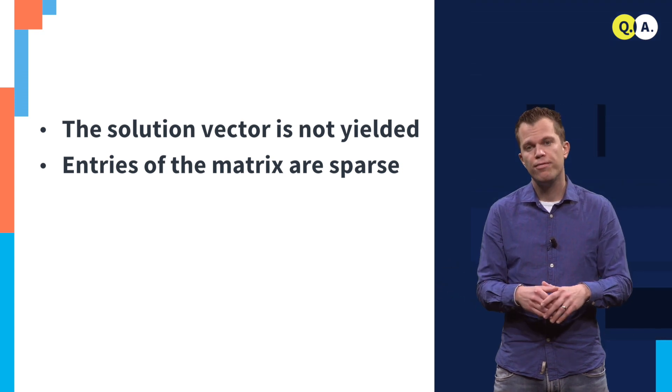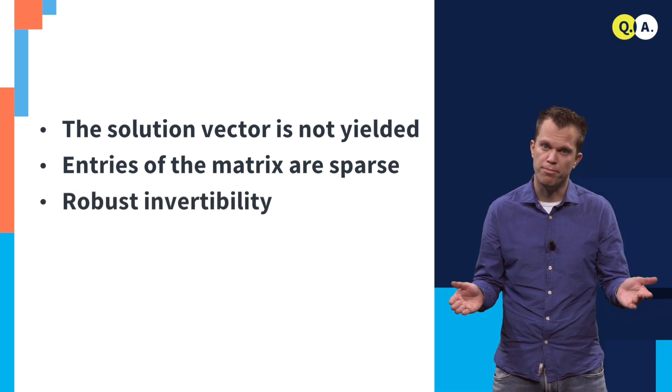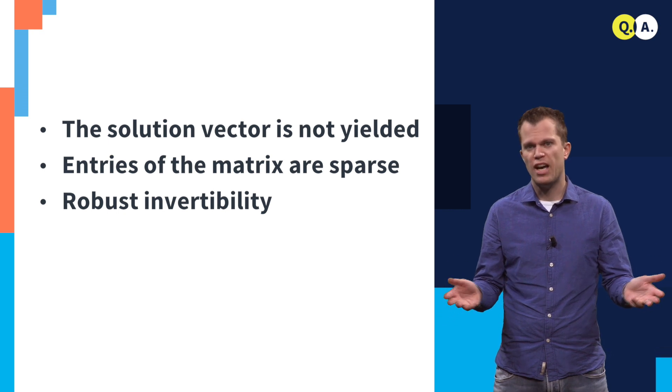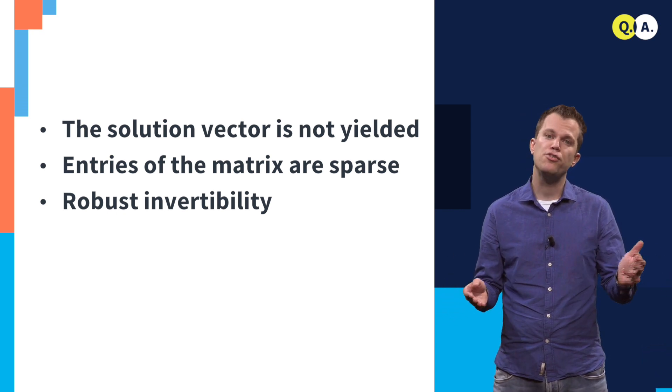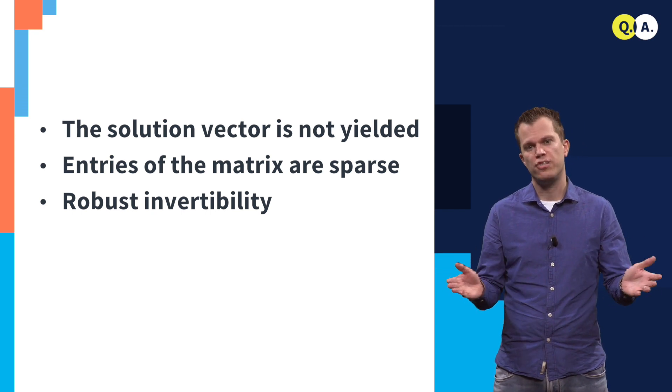Another limitation is that it must also satisfy robust invertibility. This is a strong technical condition, and roughly means that the entries of the matrix must all be of approximately the same size.